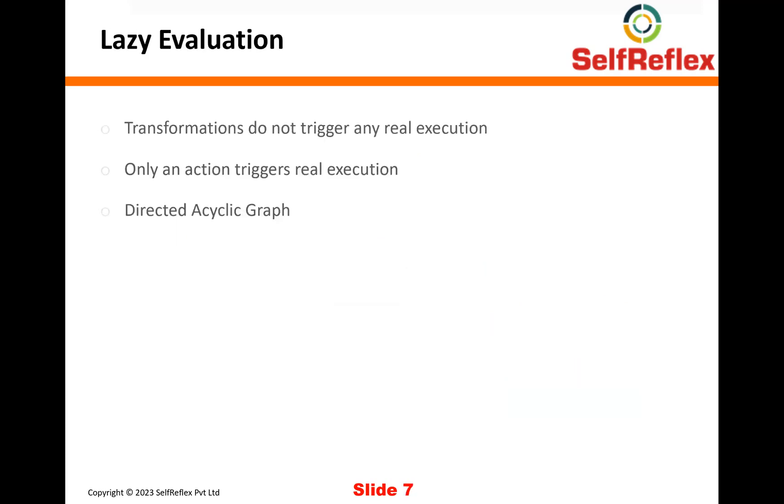So this is what the lazy evaluation is that I was talking about. So transformations do not really trigger any real execution. It is just being recorded. So when you're applying map on your RDD, it's not really moving any data or doing any processing on your data. It's just recording that this data needs to be processed with this business logic. Only when you apply an action, let's say you say collect or count on that RDD after map function, at that time it will go ahead and then execute that map function. So only an action triggers real execution. And as I said, directed acyclic graph comes into picture at this moment.